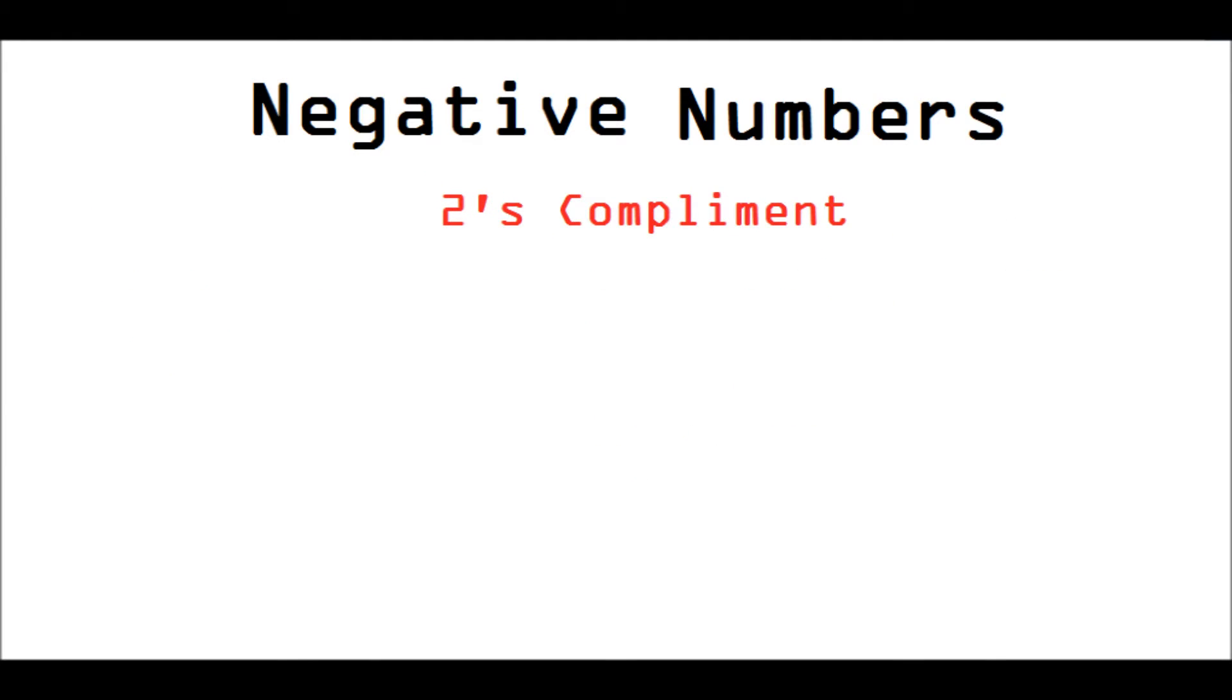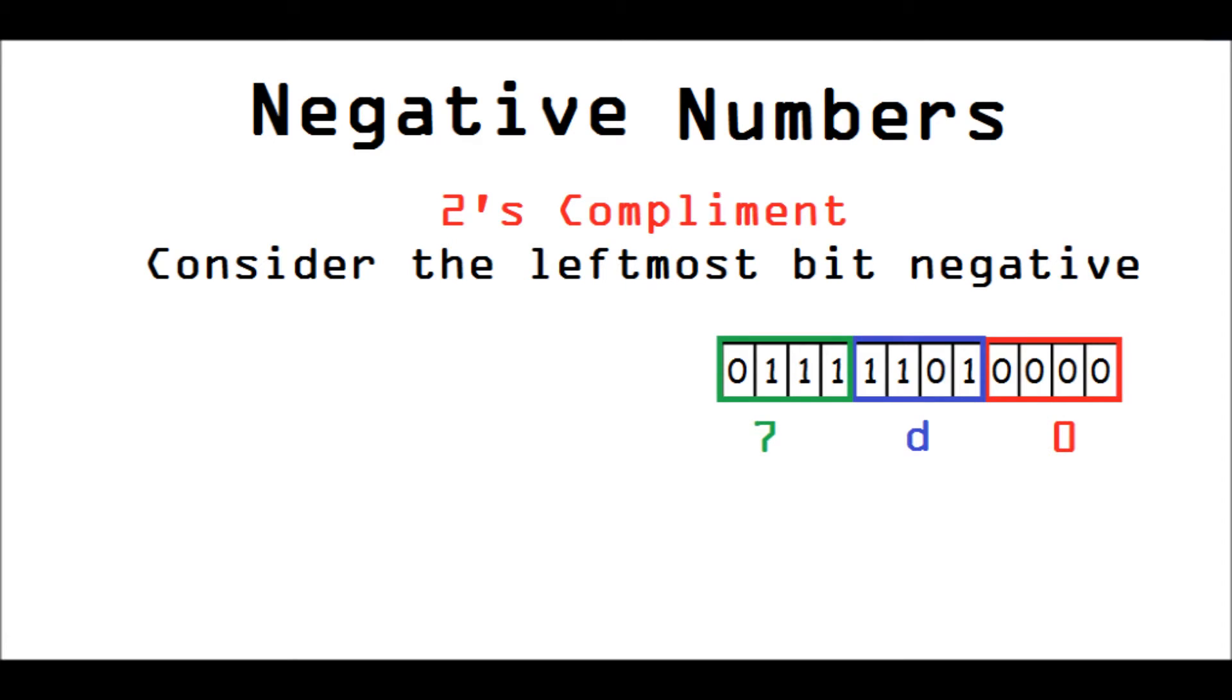Another way to get a negative number is by two's complement where you assume that the leftmost bit is negative and then you subtract the leftmost bit away from all the other ones. And so, here's an example.